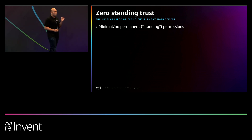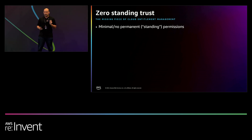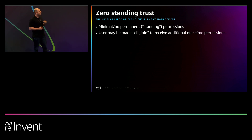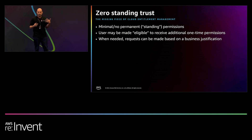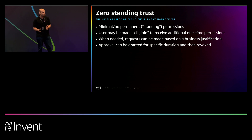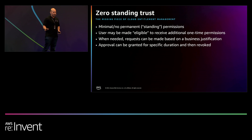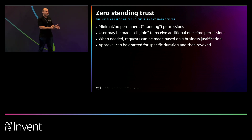What we want to reach with this feature for your environment is something we call zero standing trust. That means people have minimal or even no permanent permissions to those sensitive resources. A user who needs access to those sensitive resources may be eligible to ask for those permissions when they need them. They make a request that needs to be approved, and once approved, they get the access temporarily for just a specific duration of time. After which, the access is gone — so there are no standing permissions all the time. If there's some kind of a breach, the fallout from it is significantly lower.